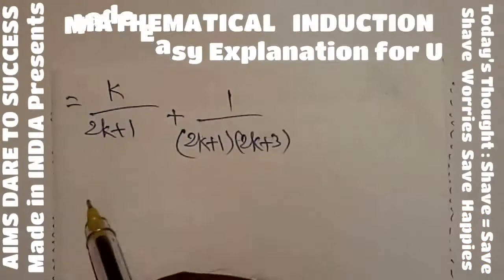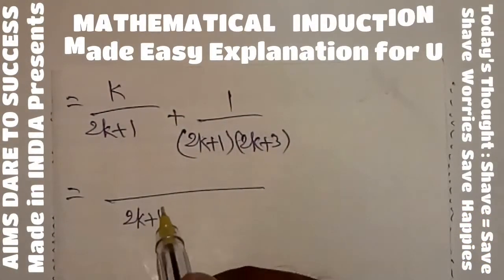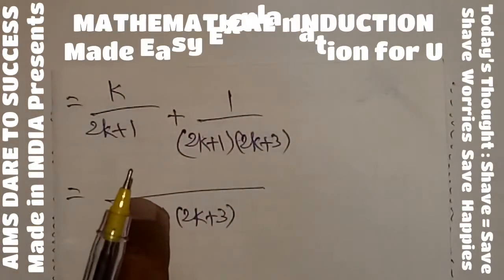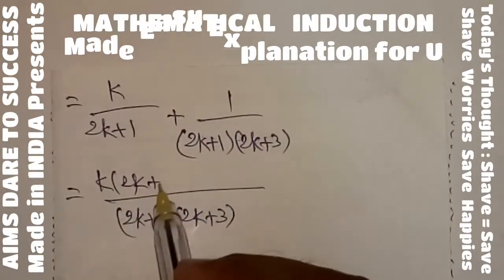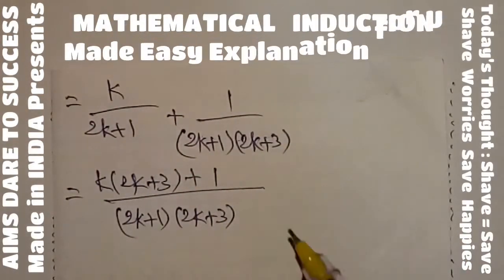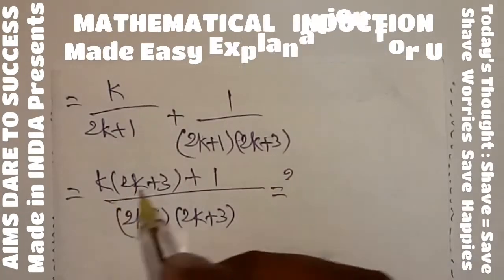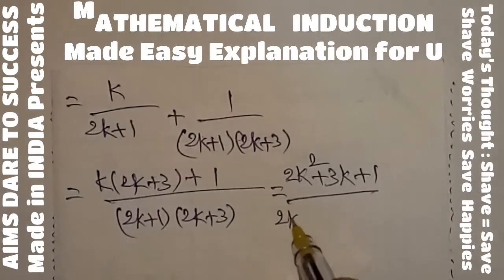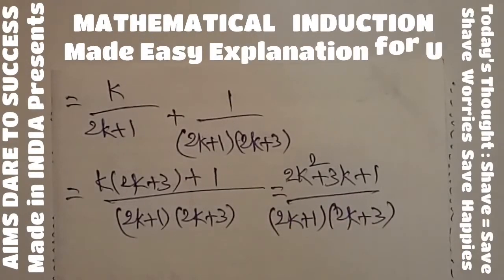Here we want to take LCM. These two denominators share (2k+1), so the total LCM is (2k+1)(2k+3). So: k×(2k+3) + 1 all divided by (2k+1)(2k+3). Expanding the numerator: k(2k+3) + 1 = 2k²+3k+1, divided by (2k+1)(2k+3).